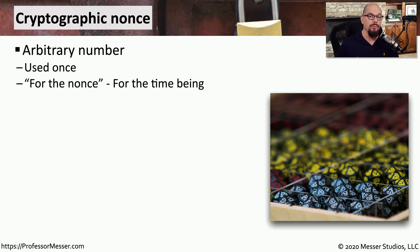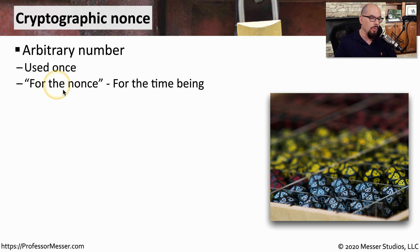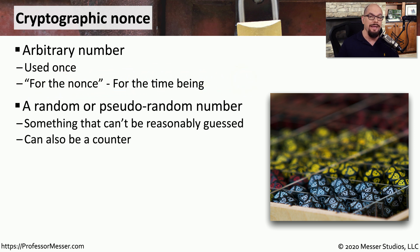To add randomization to this cryptographic process, we need to add a nonce. A nonce is an arbitrary number that you use one time. It comes from the term 'for the nonce,' which means 'for the time being.' This nonce would be a random value, randomized enough so that an attacker would not be able to guess it or easily replicate it. It could even be a counter, as long as both sides are able to keep track of what the counter's values might be.